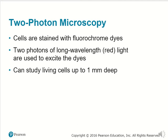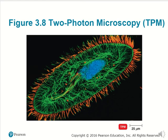Two-photon microscopy goes one step further. Cells are initially stained with fluorescent dye, a photon of light is shot toward that substance, and then a second photon of light is shot to further increase that wavelength. Essentially, two photons of long wavelength or low energy red light are used to excite dyes. It can help study cells that are upwards of one millimeter deep. Two-photon microscopy gives a very beautiful image.